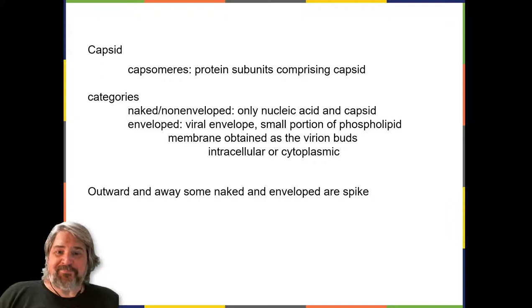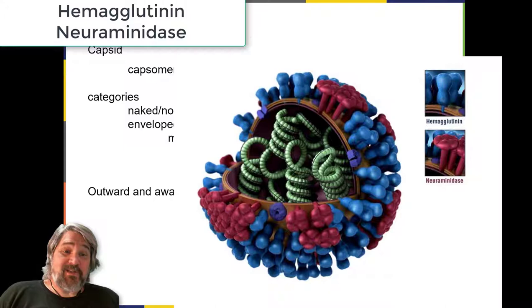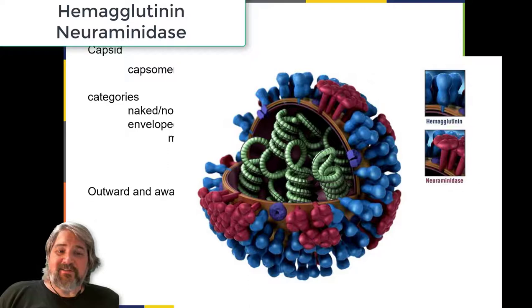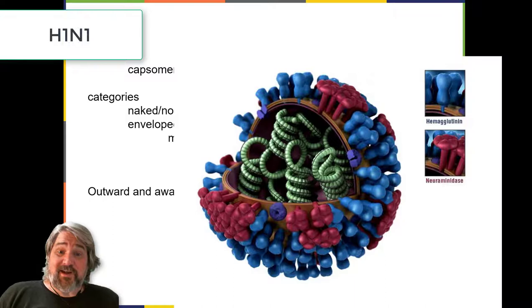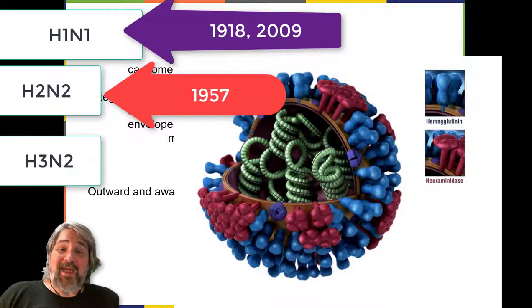Extending outward from the capsid on some naked and enveloped viruses are protein structures called spikes, which allow the virus to attach to and enter a cell. For example, influenza virus hemagglutinin spikes facilitate attachment, and neuraminidase spikes allow the virus to detach from the cell surface during release of new virons—that's where we get the H and N designation. Influenza viruses are often identified by their H and N spikes: H1N1 caused pandemics in 1918 and 2009, H2N2 in 1957, and H3N2 in 1968.